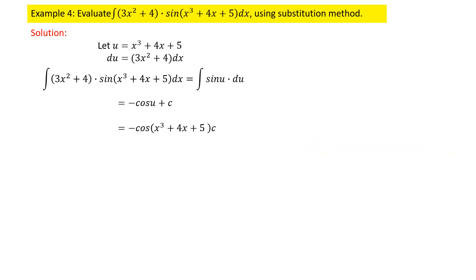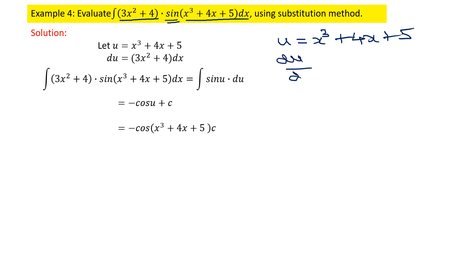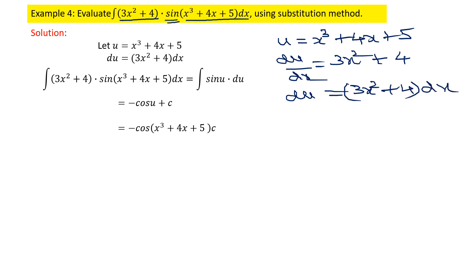Problem four has two brackets — one contains a trigonometric function (sine or cosine), and the other is the argument. When a trig function is given, make the substitution for the argument. So let u = x³ + 4x + 5. Then du/dx = 3x² + 4, giving du = (3x² + 4) dx.